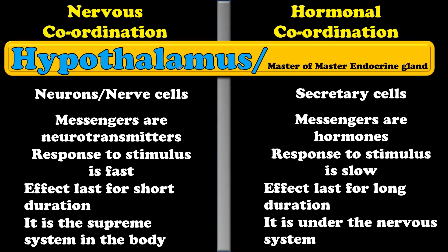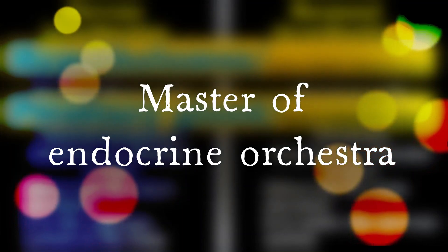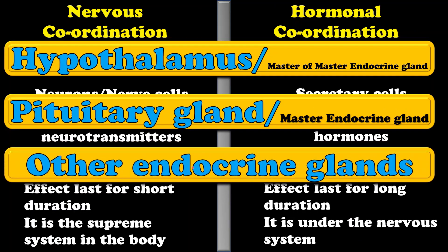Students, you must be aware of the hypothalamus. It is a part of the nervous system. It is also called the master of the master endocrine gland, as it controls the master endocrine gland — that is the pituitary gland. This pituitary gland is also said to be the master of the endocrine orchestra, and it controls all other endocrine glands of the body. In nutshell, hormonal coordination is under the control of nervous coordination, and the body is controlled and coordinated by the nervous system as well as the endocrine system.